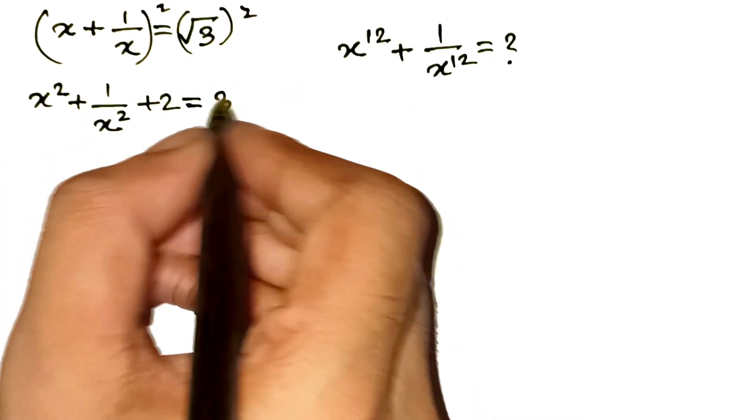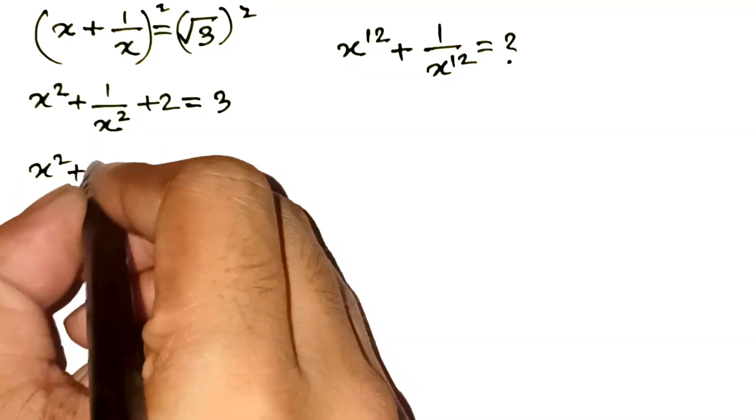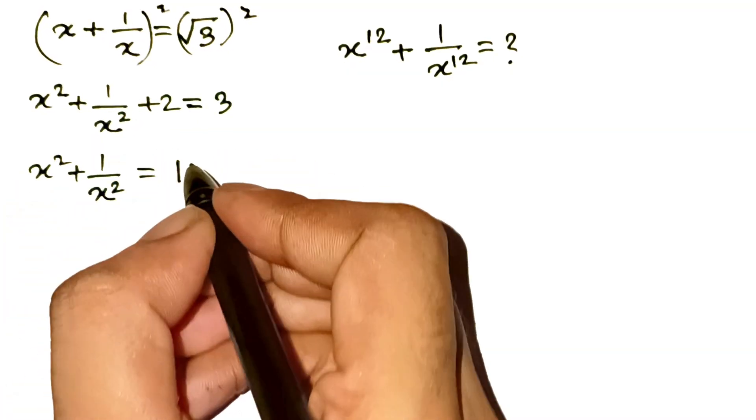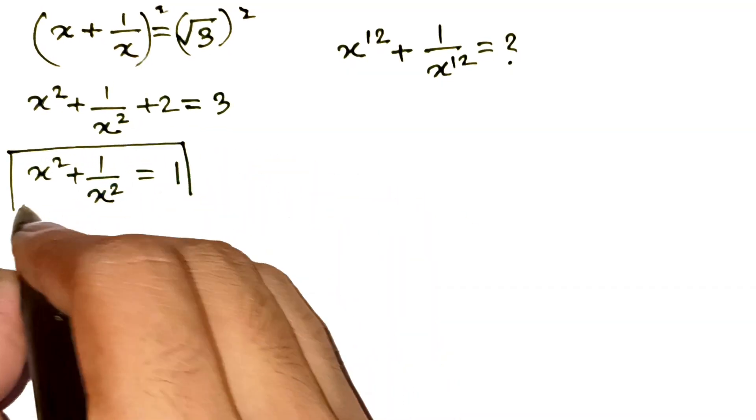Subtract 2 from both sides, and boom. x squared plus 1 over x squared equals 1. That's our first checkpoint, neat and tidy.